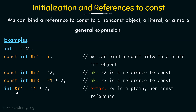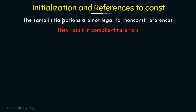Next, I am declaring a normal reference r4 of type integer and binding it to r1 * 2. This is going to throw an error because r4 is a plain non-const reference but r1, the object we are trying to bind to, is a reference to a const. It is not possible to bind a plain or ordinary reference to a const reference. Non-const references cannot be bound to const references, but the vice versa is possible. The same initializations are not legal for non-const references — they result in compile-time errors.